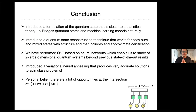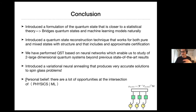To conclude: we introduced a formulation of the quantum state closer to statistical theory, representing it in terms of probability distributions. We used that to reconstruct quantum states of increasingly large sizes. We also introduced a variational formulation of simulated annealing that produces very accurate solutions to spin glass problems with applications across many areas. There are a lot of opportunities at the intersection of condensed matter physics and machine learning.